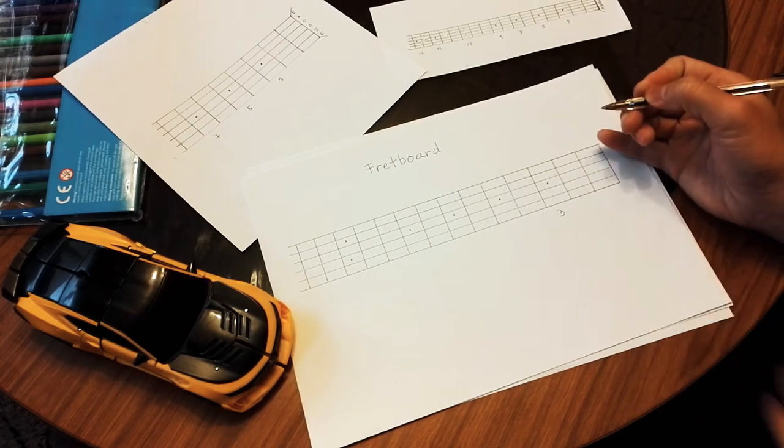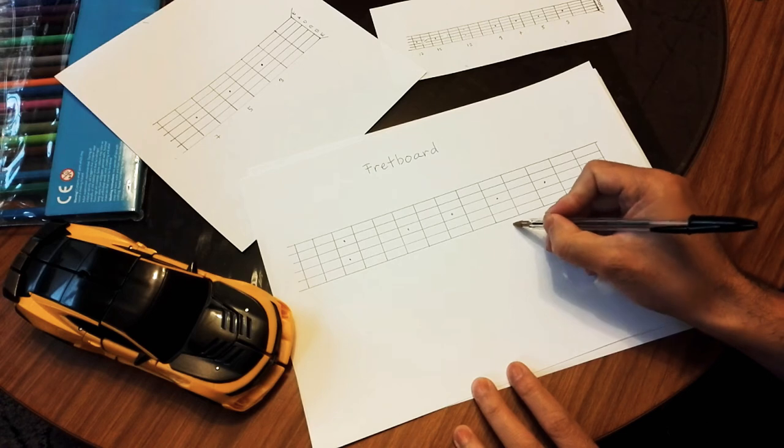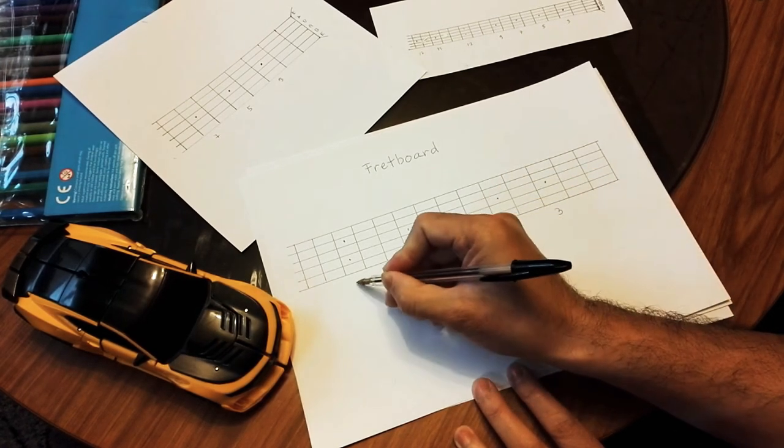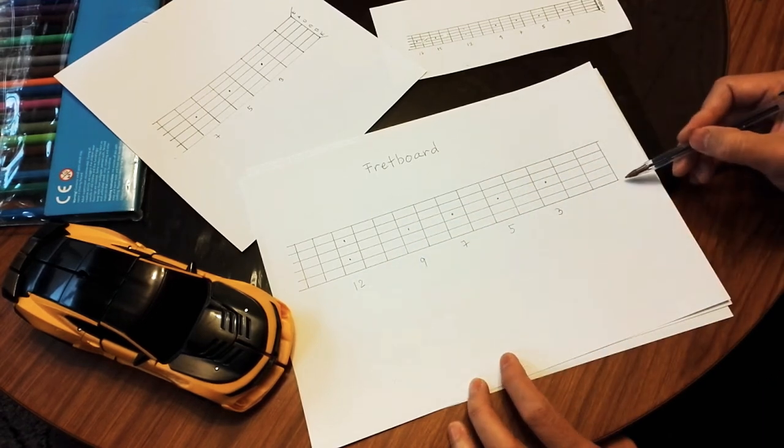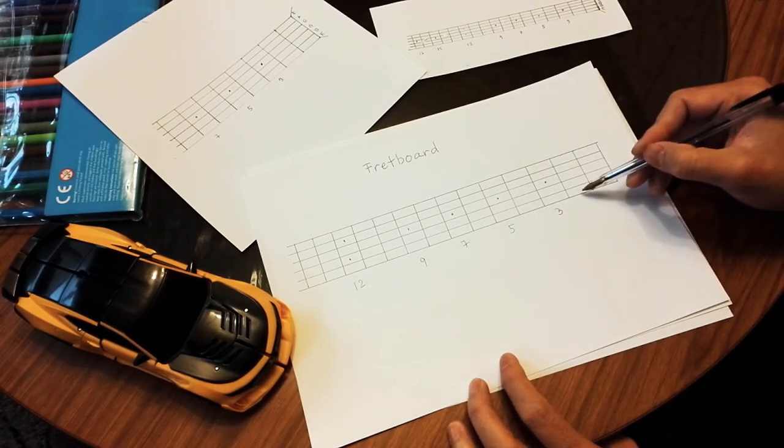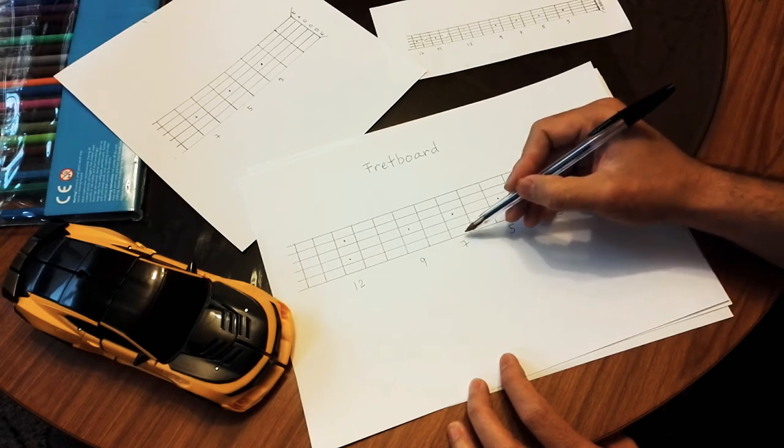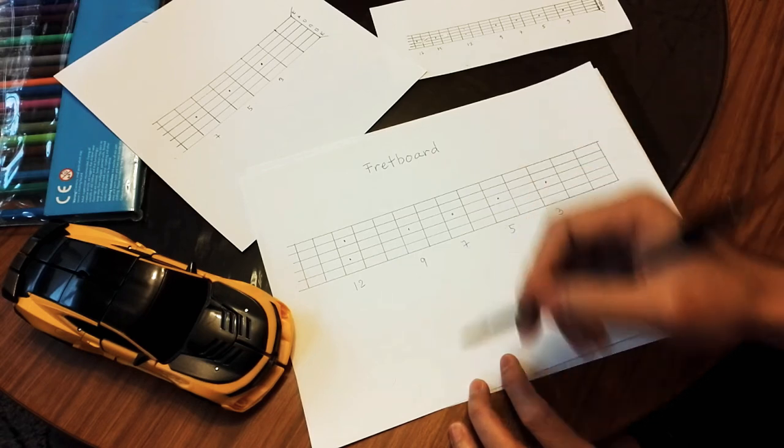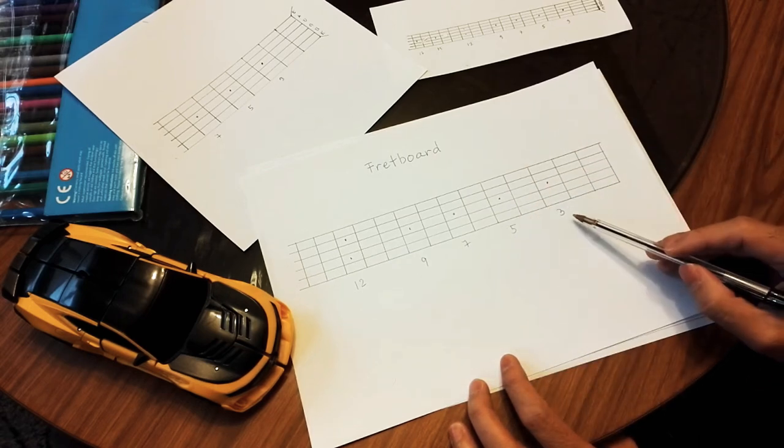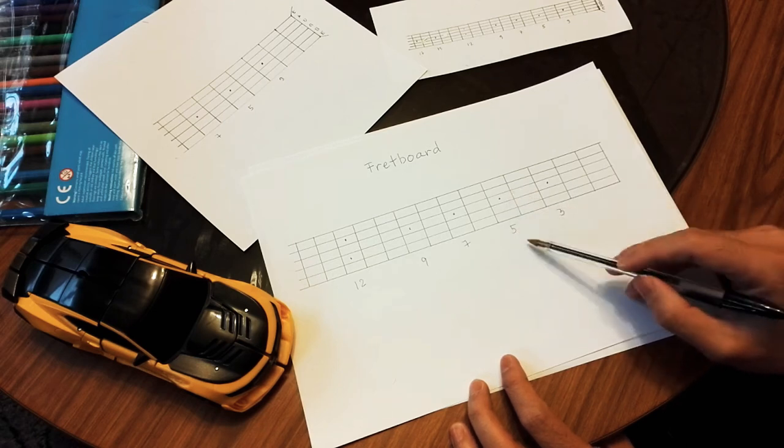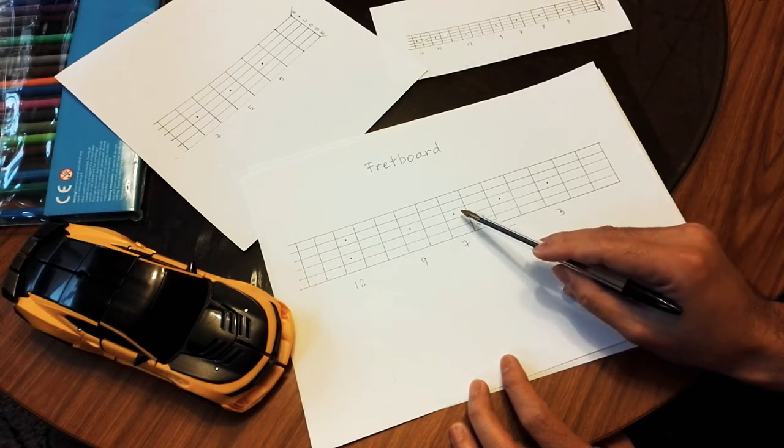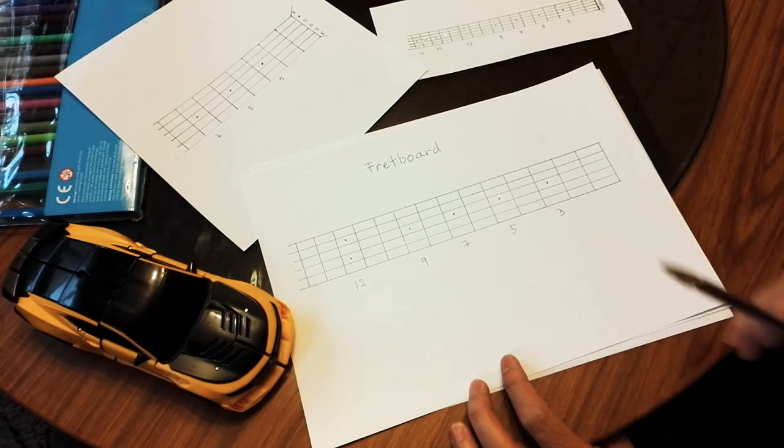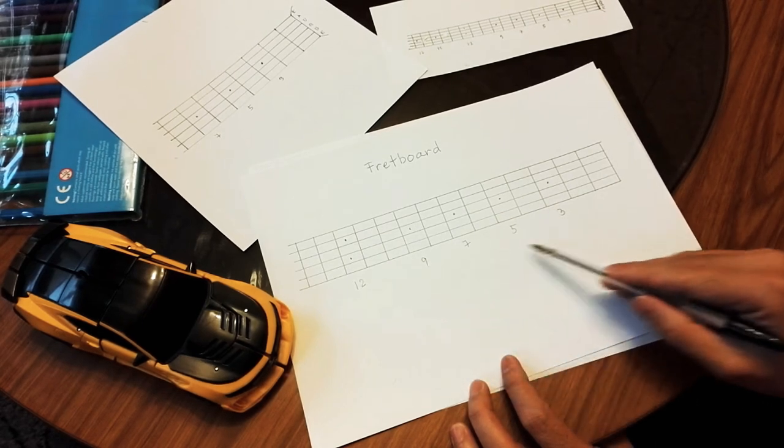Let's start off with the first part, which is on the third fret, and then you got fifth, seventh, ninth, and twelve. If this is zero, one, two, three, four, five, six, seven, eight, nine, ten, eleven, twelve - no need for you to keep counting frets. You just know that the first dot is on the third fret, second dot on the fifth, third dot on the seventh, fourth dot on the ninth, then this double dot is on the twelfth.